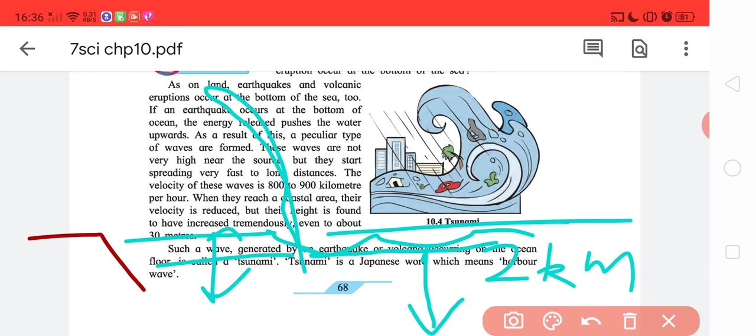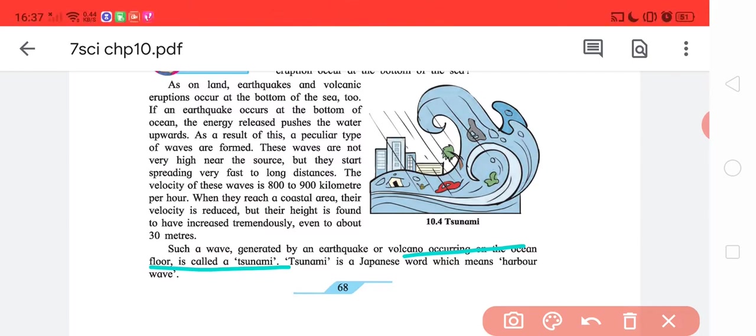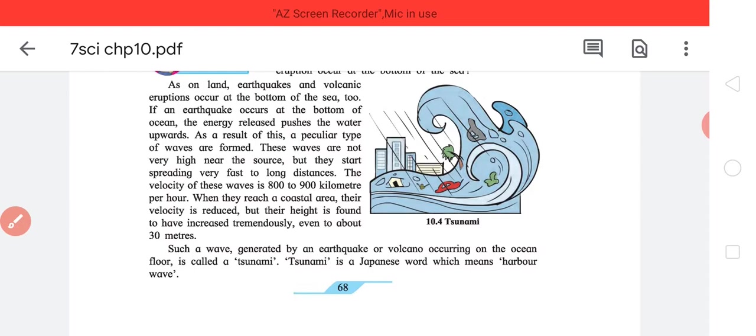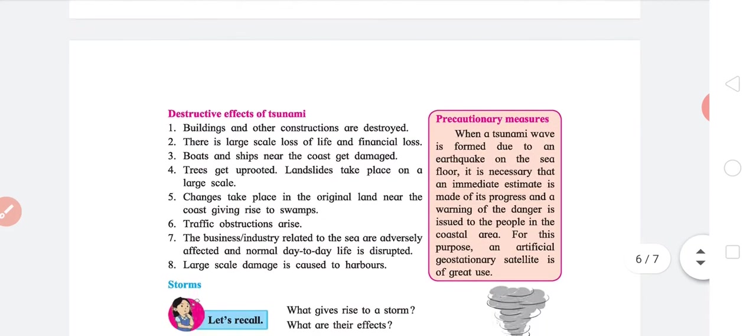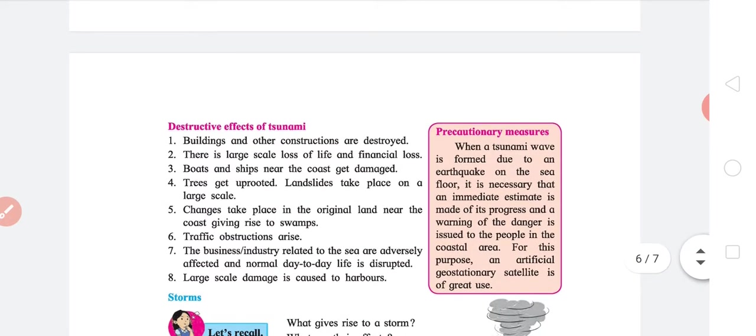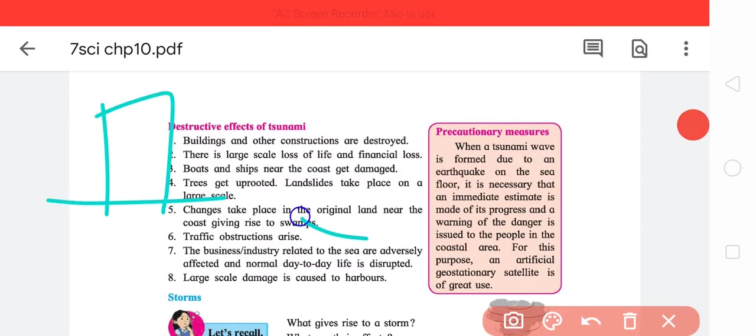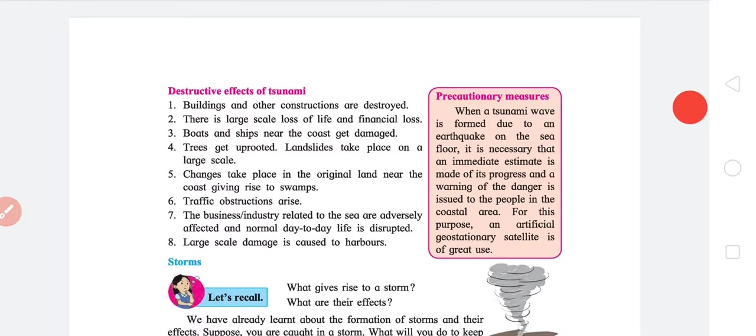Such waves generated by earthquake or volcano occurring on the ocean floor are called tsunami. Tsunami is a Japanese word which means harbor waves. Japan was recently, not recently technically, but much of a recent case was affected by a tsunami. What happens in tsunami? Buildings and other constructions are destroyed because the waves are really high, and if there is a building and there is a high wave coming, they are immediately destroyed because the waves are really powerful. There is large scale loss of life and financial loss. Three, boats and ships near the coast get damaged.